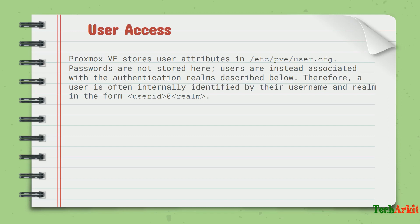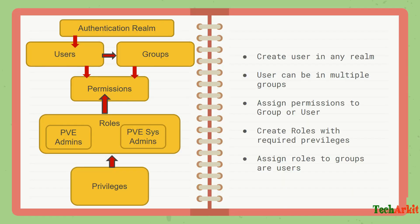Proxmox stores user attributes in /etc/pve/user.cfg — that is the configuration file. Passwords are not stored in the cfg file. Users are instead associated with authentication realms, such as PAM, PVE, LDAP, and AD. A user is internally identified by their username and realm in the form of userID@realm. For example, if you create a local user, the user ID is username@realm-name.